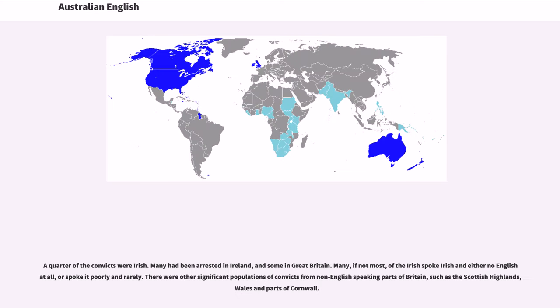A quarter of the convicts were Irish. Many had been arrested in Ireland, and some in Great Britain. Many, if not most, of the Irish spoke Irish and either no English at all, or spoke it poorly and rarely. There were other significant populations of convicts from non-English-speaking parts of Britain, such as the Scottish Highlands, Wales and parts of Cornwall.